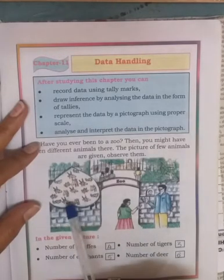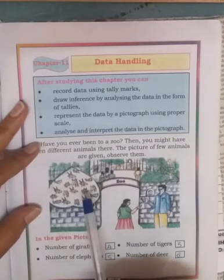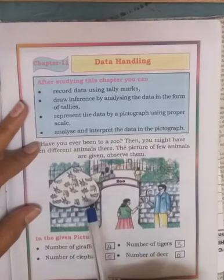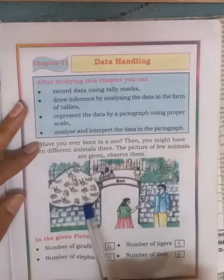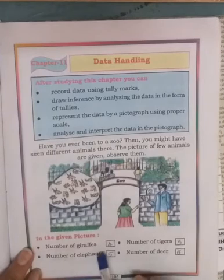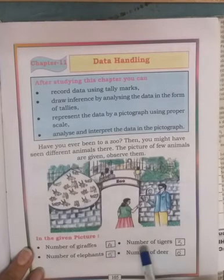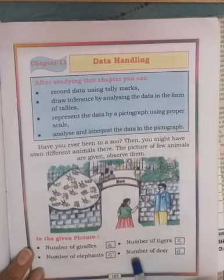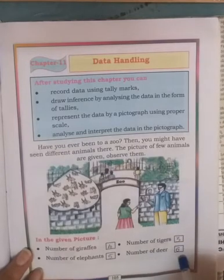Dear students, only the faces of animals are given. You observe these faces of the animals and identify the number of giraffes, elephants, tigers, and deer. The number of giraffes is 4, the number of elephants is 5, the number of tigers is 3, and the number of deer is 6.